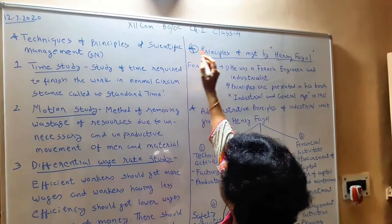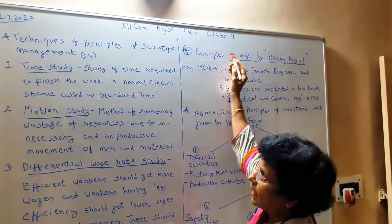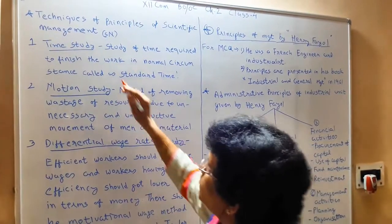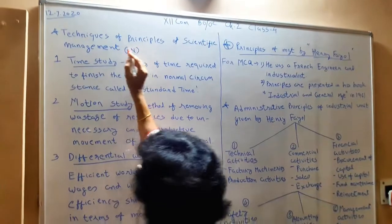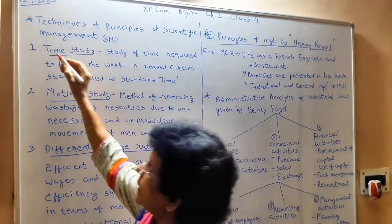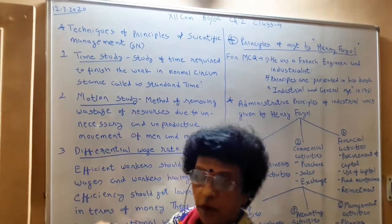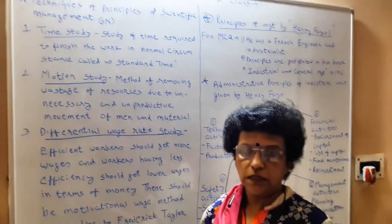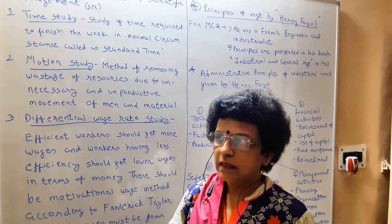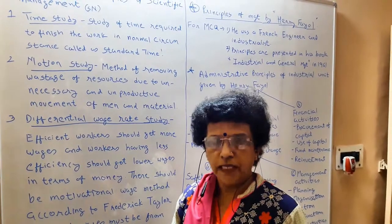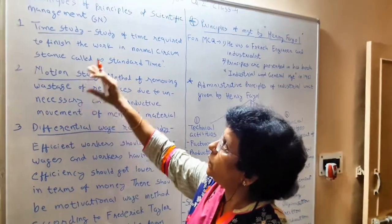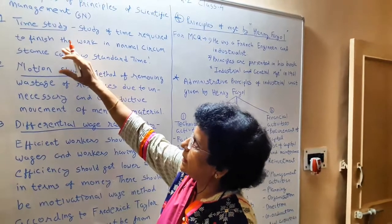Today in B.O. class chapter 2, class 4, we are going to learn about Frederick Taylor. He has given various techniques — the principles of scientific management techniques. He recommended that if you want the proper utilization of your resources, you have to be technical. We understood yesterday the principles of management. Today, scientific management principles — they have recommended a few techniques.